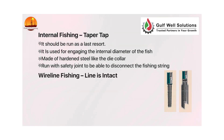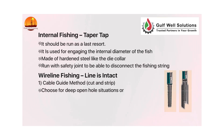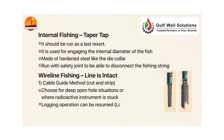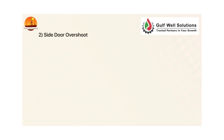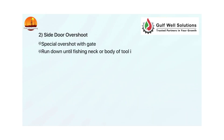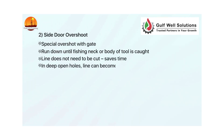Wireline fishing — line is intact. Method one: cable guide method — cut and strip. Choose for deep open hole situations or where a radioactive instrument is stuck. Logging operation can be resumed — logging while fishing. Safest method with a very high success ratio. Method two: side door overshot — a special overshot with a gate. Run down until the fishing neck or body of tool is caught. The line does not need to be cut, which saves time. In deep open holes, the line can become key-seated or differentially stuck in filter cake.